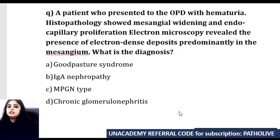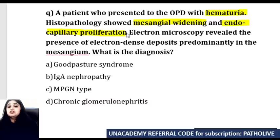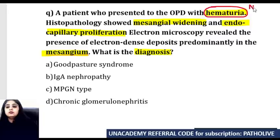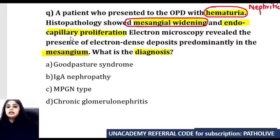Next question: a patient presented with hematuria, histopathology showed mesangial widening and endocapillary proliferation, and electron microscopy shows deposits predominantly in the mesangium. What is your diagnosis? Since the patient has hematuria, I think of nephritic syndrome. Among nephritic disorders, the one that characteristically shows mesangial deposition is IgA nephropathy.